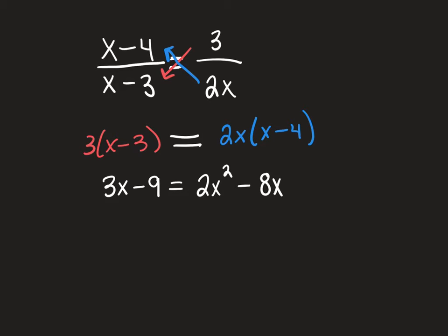Quadratic. It's a quadratic equation, like from section 2.4. So let's set it equal to zero. We're going to subtract the 3x and we're going to add the 9, which is going to make it equal to 0. So we get 2x squared minus 11x plus 9 equals 0.